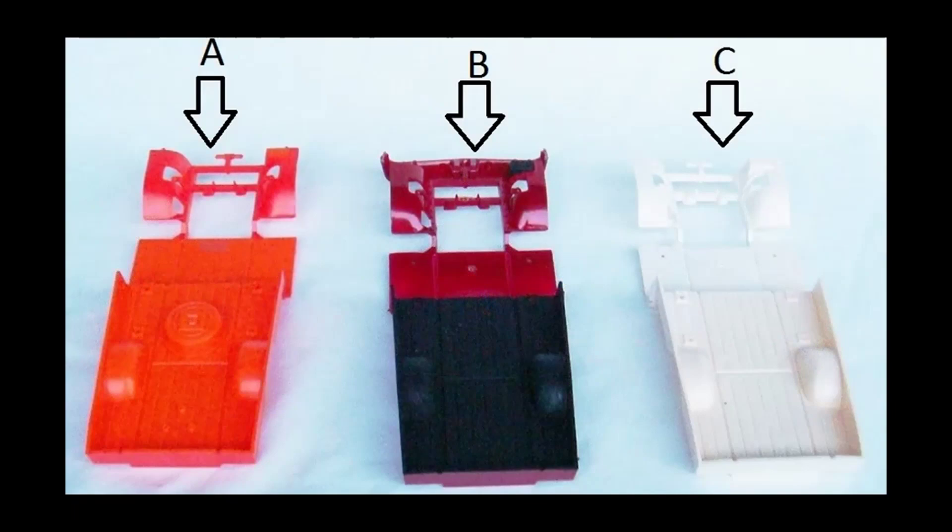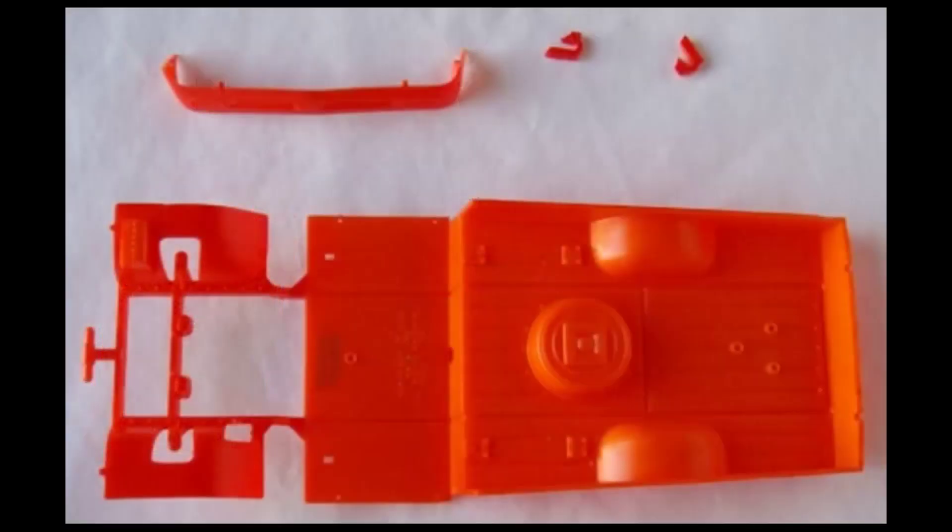We find the same is true for the chassis pan here. A is the Street Fighter and B is Street Fighter 2. Bad Actor is C. The Street Fighter has a tire well there in the center and a section for fuel tanks in the bed, but the other two do not. So grab the chassis pan frame out of the kit there along with these attendant pieces.